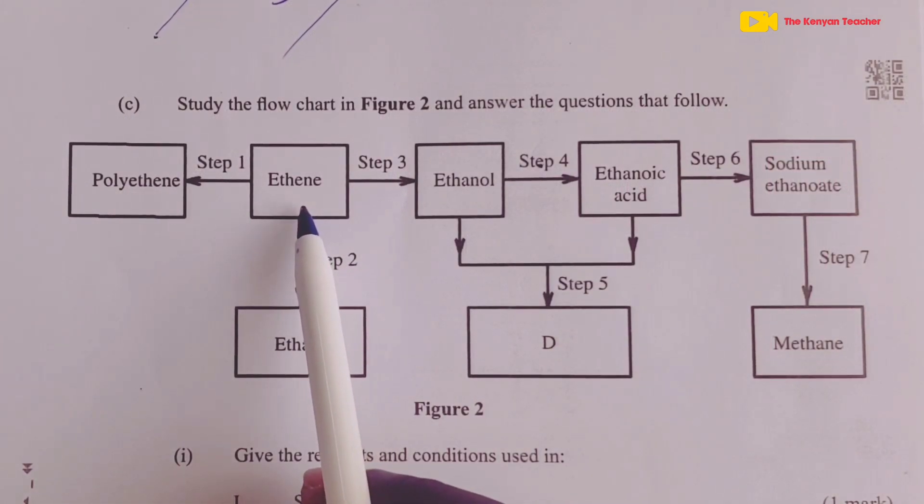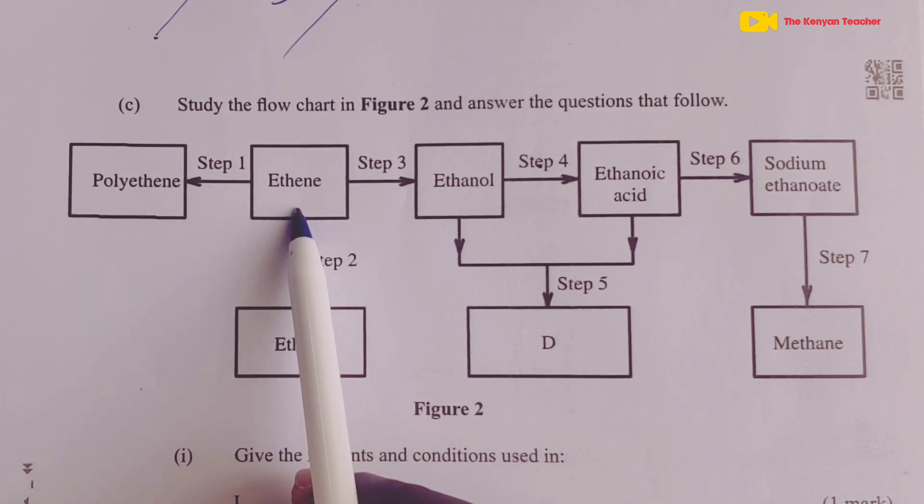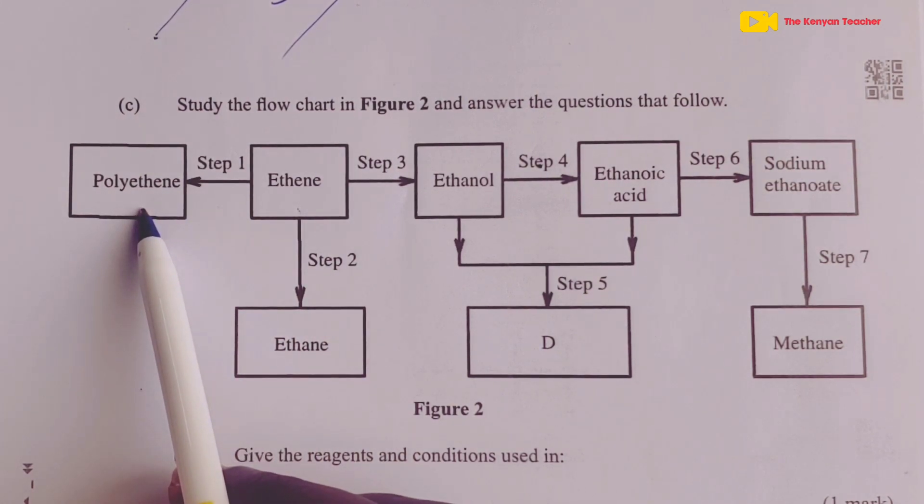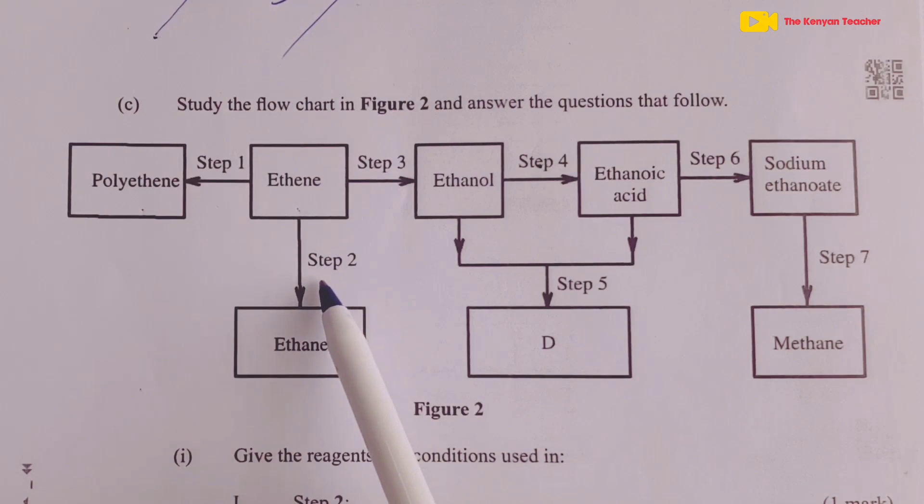We are beginning with ethene. To the left, we have step 1 where we form polyethene. Step 1 is a polymerization process with conditions including high temperature and high pressure. Moving down, we have step 2 from ethene to ethane. The process involved in step 2 would be called addition reaction, but specifically hydrogenation, where we need hydrogen gas and some nickel catalyst together with temperatures of between 150 to 250 degrees Celsius.